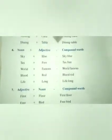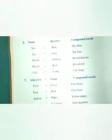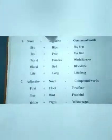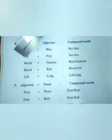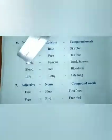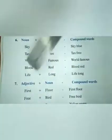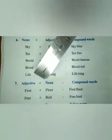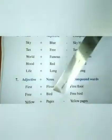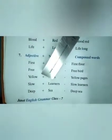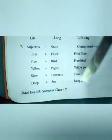Noun plus adjective compound words — adjectives describe nouns. Examples: 'sky' plus 'blue' gives 'sky blue'. 'Tax' plus 'free' gives 'tax free'. 'Word' plus 'famous' gives 'word famous'. 'Blood' plus 'red' gives 'blood red'. 'Life' plus 'long' gives 'lifelong'. Adjective plus noun: 'fast' plus 'four' gives 'fast four'. 'Free' plus 'word' gives 'free word'. 'Yellow' plus 'pages' gives 'yellow pages'. 'Deep' plus 'sea' gives 'deep sea'.